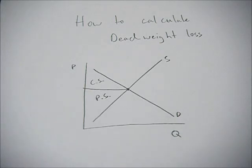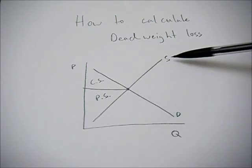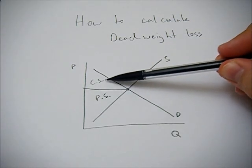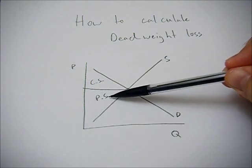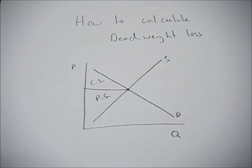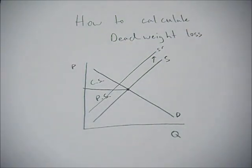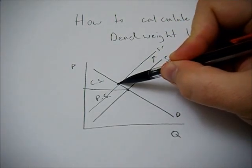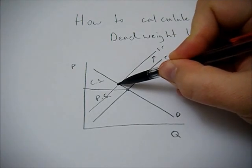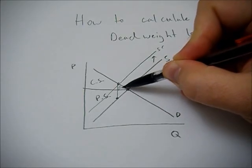This video covers how to calculate deadweight loss and what it is. Deadweight loss arises from an economy not having the maximum surplus possible. In a perfectly competitive model, with supply and demand, the area above price and below demand is consumer surplus, and the area below price and above supply is producer surplus. There's no deadweight loss here because surplus is maximized. However, if a tax or externality is introduced, one of these curves shifts, and the difference between where we should be and where we are creates deadweight loss.